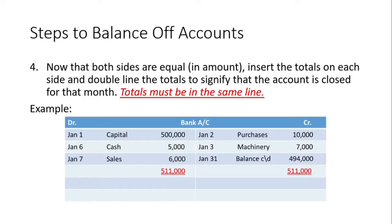Now that both sides are equal in amount, we can insert the totals on each side. The totals must be on the same line — even if you have to adjust to get them aligned. Now that we have our totals of $511,000 on the same line, we double-line the totals to signify that we are finished with this account for this month or period.